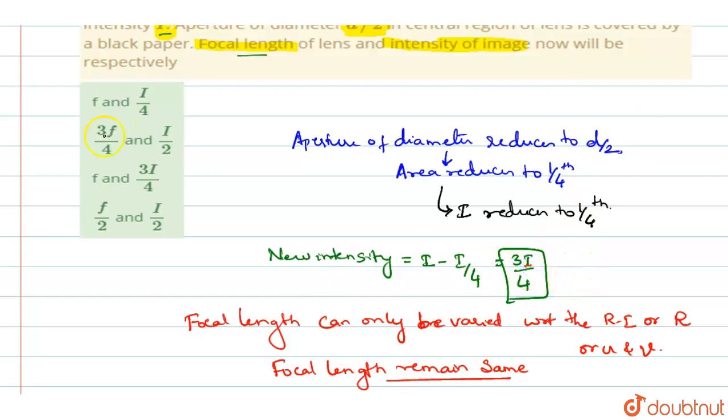Focal length remains same whereas the intensity will become 3I/4. So you can say option C, f and 3I/4, is the right answer.